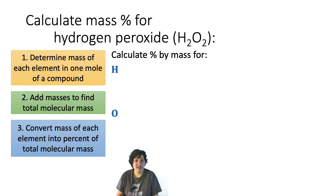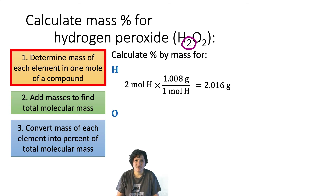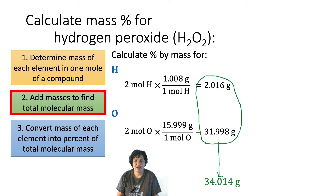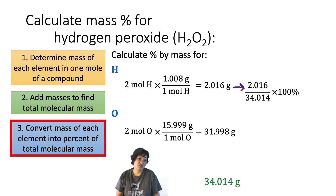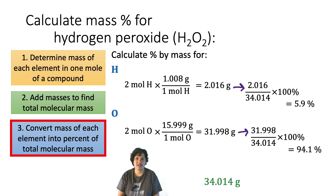Let's do another example: hydrogen peroxide. Like water, hydrogen peroxide is made up completely of hydrogen and oxygen, but it has a different molecular formula. We still have two moles of hydrogen — multiplying by the molar mass gives 2.016 grams of hydrogen per mole of hydrogen peroxide. But in this molecule we have two moles of oxygen, and multiplying by the molar mass gives 31.998 grams of oxygen. Adding those up gives a molecular mass of 34.014 grams per mole. Dividing 2.016 grams of hydrogen by 34.014 grams and converting to a percent, hydrogen peroxide is 5.9% hydrogen by mass. Doing the same for oxygen, oxygen makes up 94.1% of the mass of hydrogen peroxide.